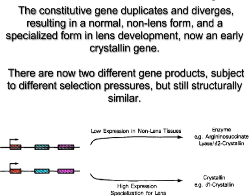This results in a normal, non-lens form and a specialized form in lens development — now an early crystallin gene. There are now two different gene products, subject to different selection pressures, but still structurally similar.